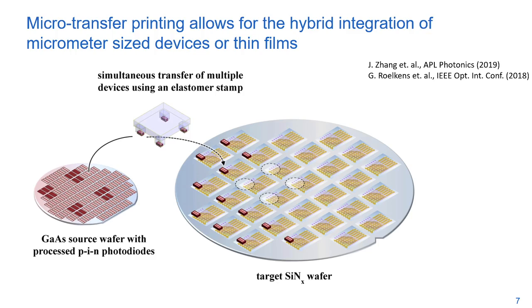Micro-transfer printing allows for hybrid integration of micrometer-sized devices or thin films. Two wafers are fabricated separately. On the source wafer, devices or coupons are patterned and released, while the photonic integrated circuits are fabricated on the target substrate. An elastomeric stamp then transfers the coupons from source to target wafer.